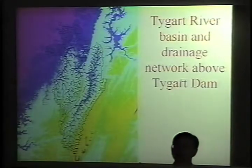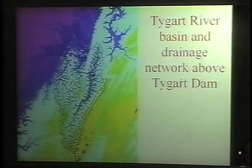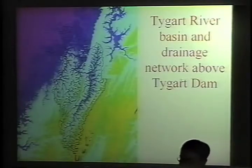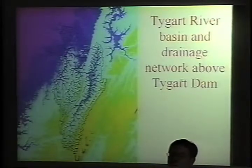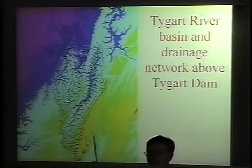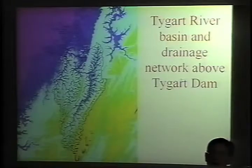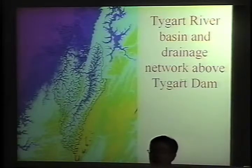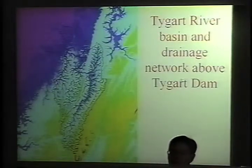The November 1985 flood had a return interval much longer than a hundred years. Discharge observations show a peak around 78,000 cubic feet per second. The design criterion for the spillway — the probable maximum flood — has a value of more than 300,000 cubic feet per second, and the May 1996 flood similarly reached around 70,000 cubic feet per second. So these events, though very large, are much smaller than what the Tigert Dam is designed to protect against.